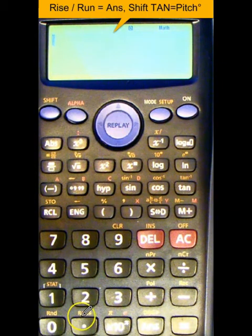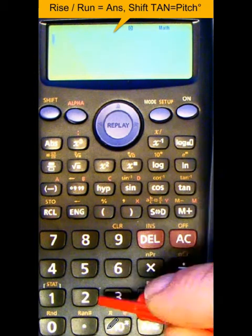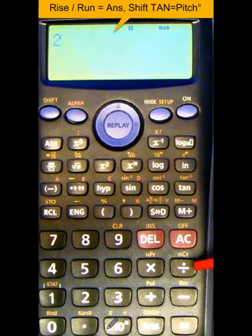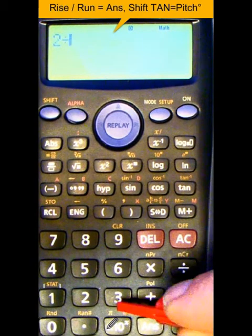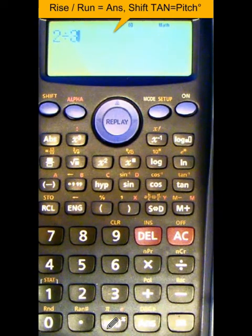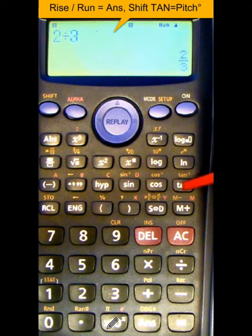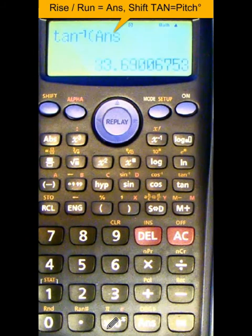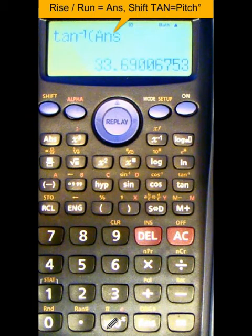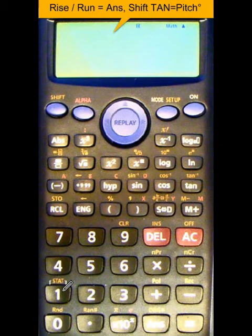We'll use the same example as before. We'll take the rise as being two. So say for instance if your rise is two, divided by the run being three in this case, just hit equals, hit shift, hit tan, and don't forget hit equals again, and that is the pitch of your roof, which is 33.69 degrees.